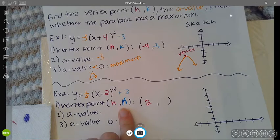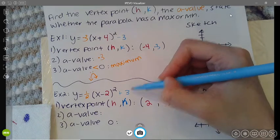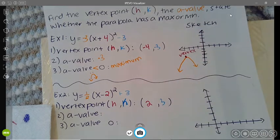The K value is whatever number is added or subtracted on the end, and you don't flip the sign. So the K is going to be a positive 3. Guess what? You already know that my vertex point is at (2, 3).